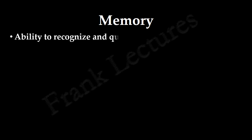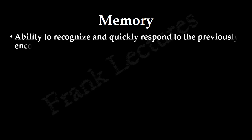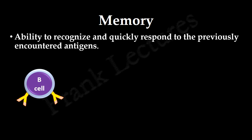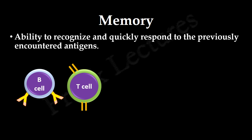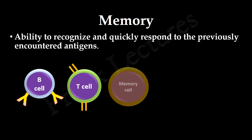The next characteristic is memory. Memory refers to the ability to recognize and quickly respond to previously encountered antigens. When the adaptive immune system comes in contact with an antigen, it produces specific antibodies and T-cell receptors. In addition, it also produces memory cells.